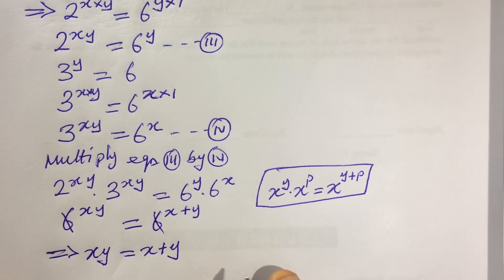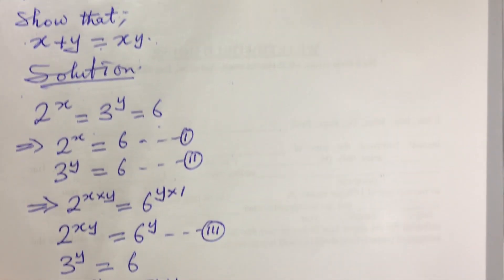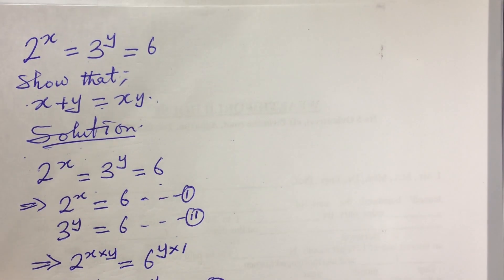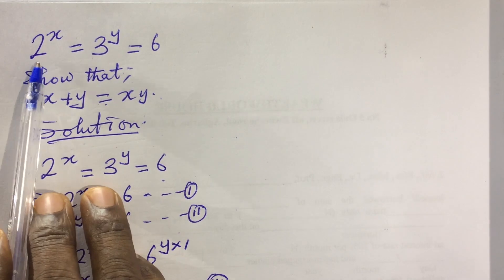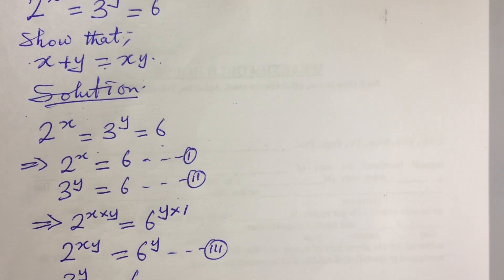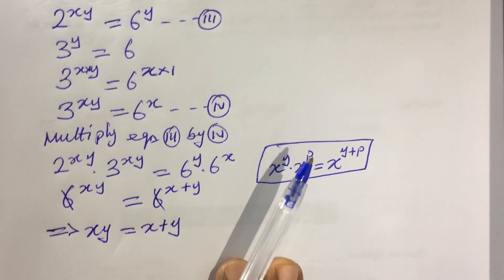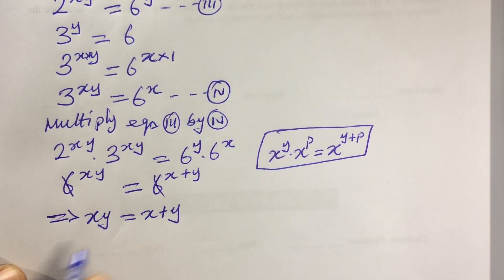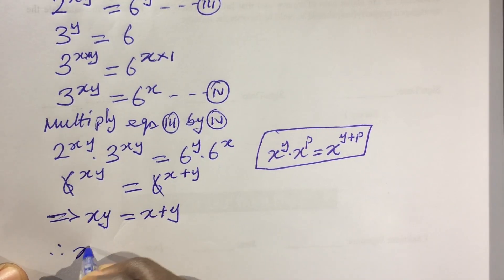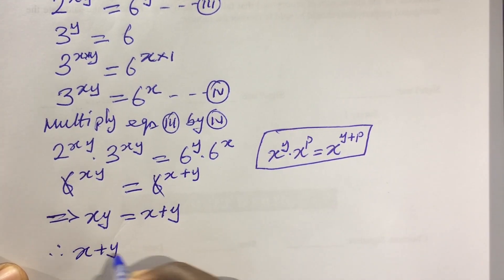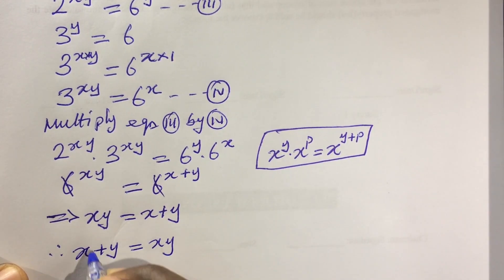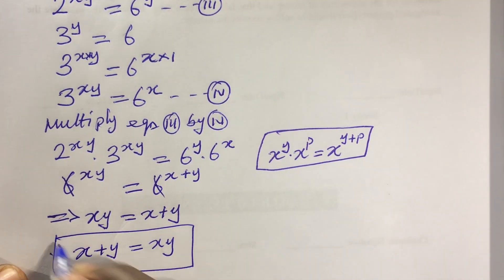Therefore, going back to our initial equation — 2 to the power of x equals 3 to the power of y equals 6 — we have shown that x plus y equals xy. Therefore, proved.